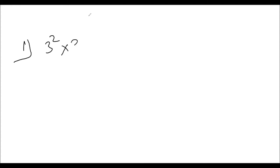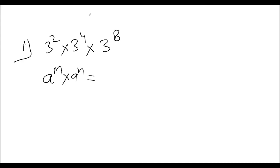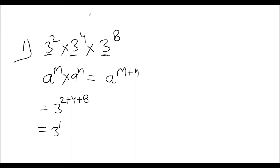The first question is 3 to power 2, into 3 to power 4, into 3 to power 8. This formula is called a to power m into a to power n — in this condition we add the powers. So here all the bases are the same, and we add the powers: 2 plus 4 plus 8 equals 14, so the answer is 3 to power 14.